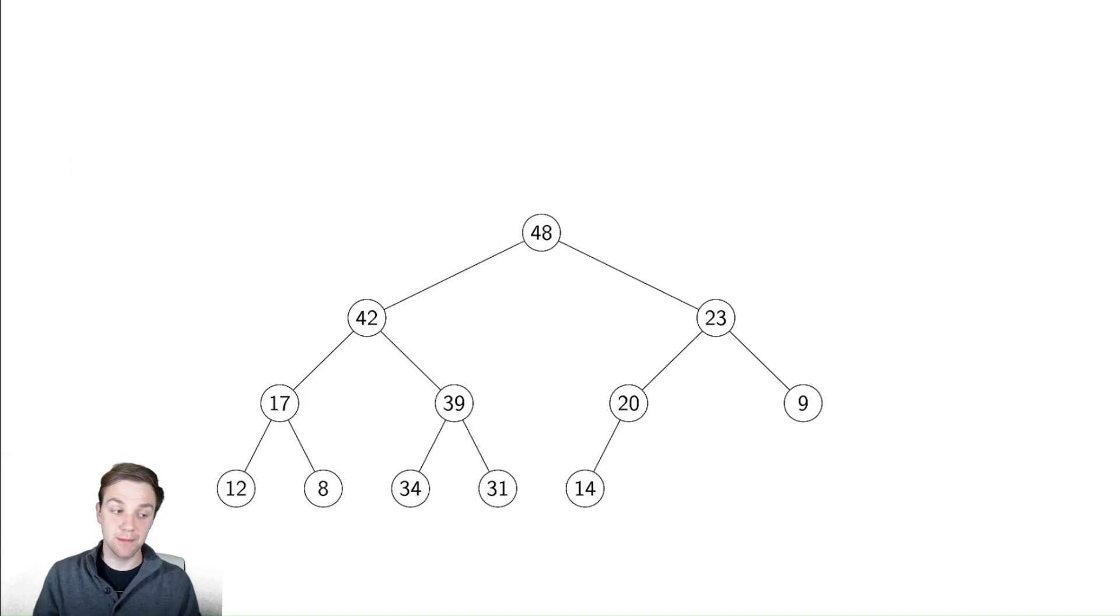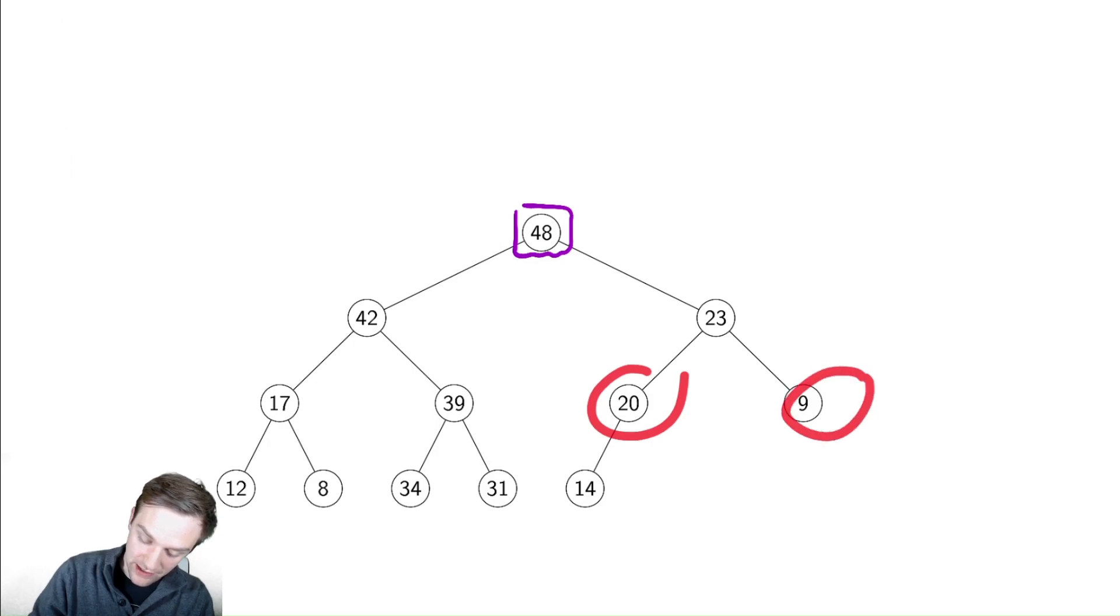A heap is a binary tree where every single node is larger than or equal to its children. So if we check, 48 is bigger than or equal to 42 and 23, 42 is bigger than or equal to 17 and 39, then 17 is greater than 12 and 8, 39 is greater than 34 and 31, 23 is greater than 20 and 9, and 14 is greater than 20.